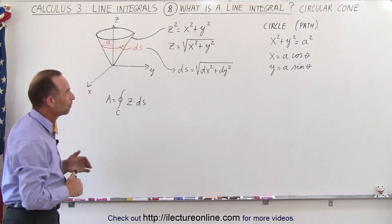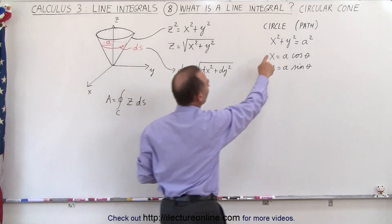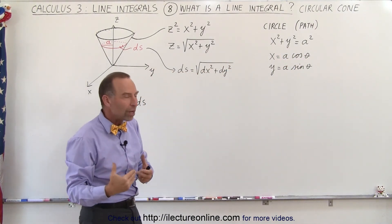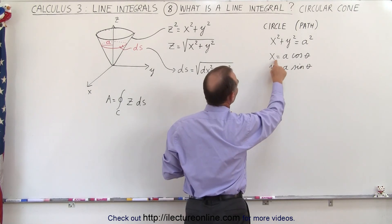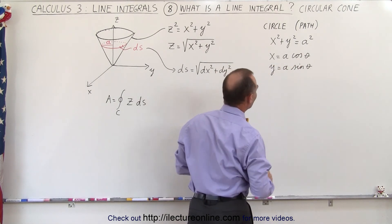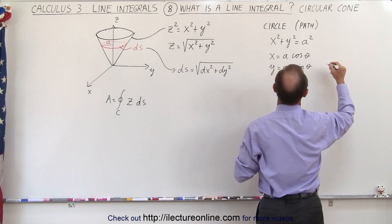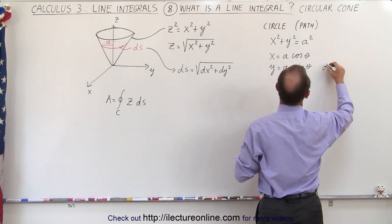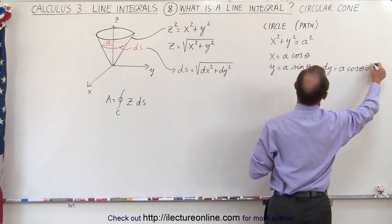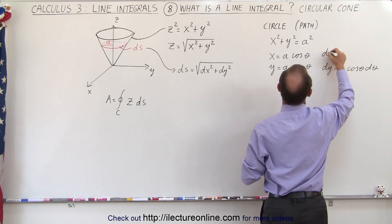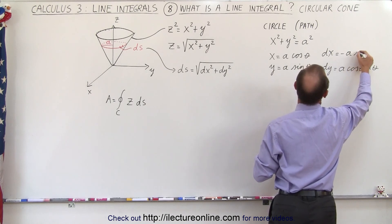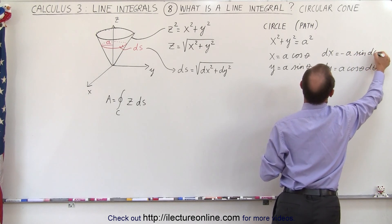a can be any value. So the circle of the path can be defined as x squared plus y squared equals a squared, and we can use the parametric equations by converting to theta, saying that x equals a times the cosine of theta, and y equals a times the sine of theta. So if we want to find dx and dy: dy is equal to a times the cosine of theta d theta, and dx, with the derivative of cosine being negative sine, is equal to negative a times the sine times d theta.